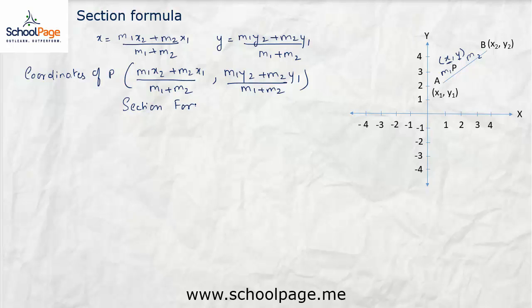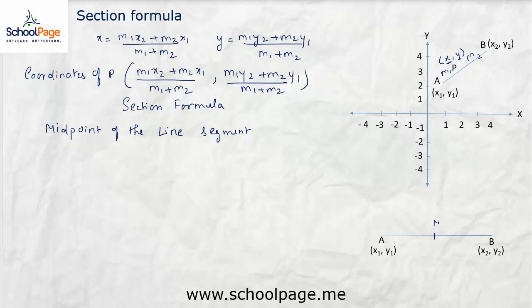Let us now find the midpoint of the line segment. For this, let us take a line segment AB. Let M be the midpoint of the line segment. Let the coordinates of A be (x1, y1) and the coordinates of B be (x2, y2). The midpoint M divides the line segment in the ratio 1 is to 1, so we have M1 equal to 1 and M2 equal to 1.